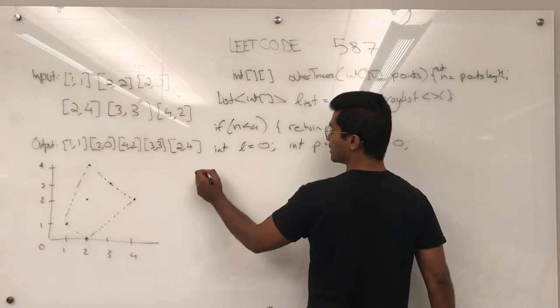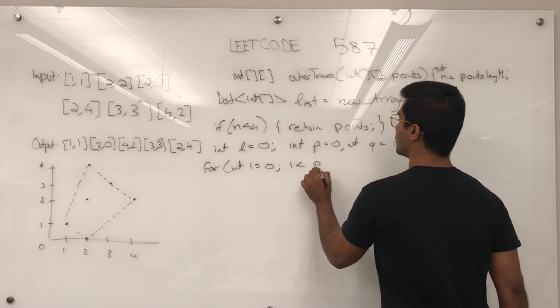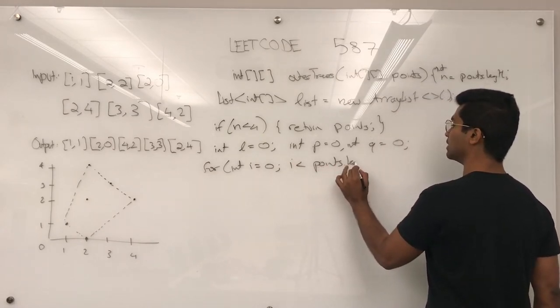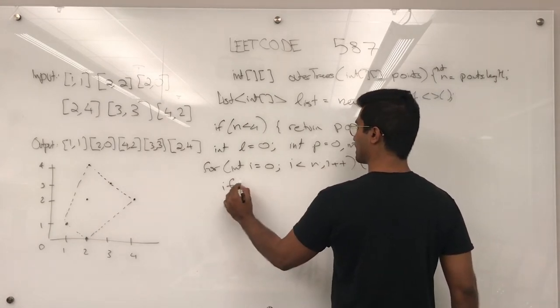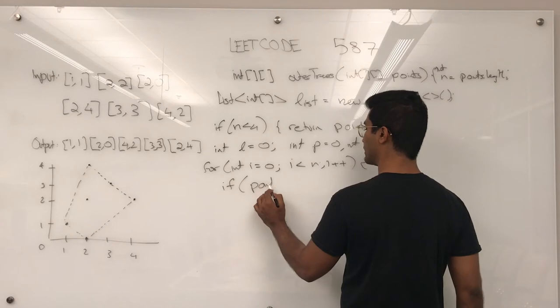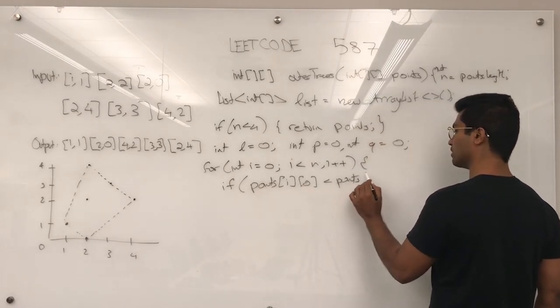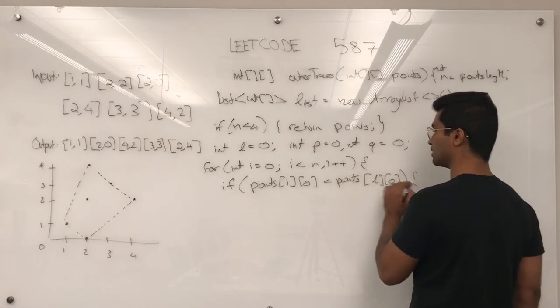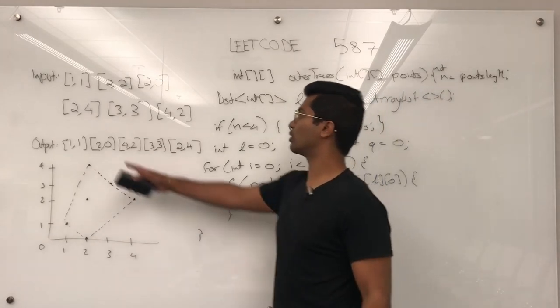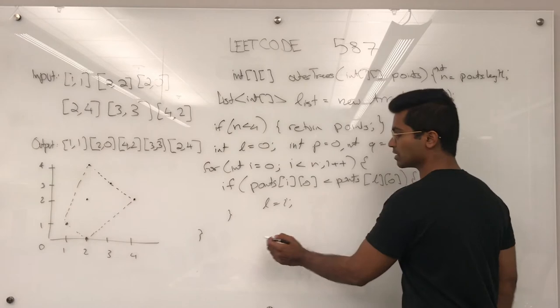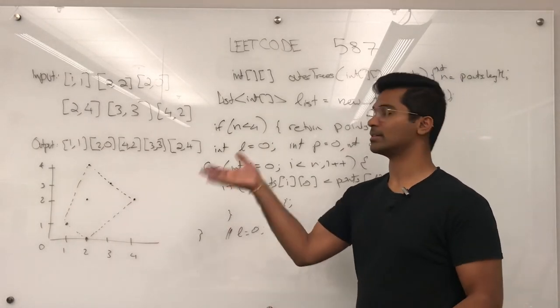So, first we have to find the leftmost, right? So, for int i is equal to 0, i is less than n, and i plus plus. If points of i of 0 is less than points of l of 0, then l is going to be set to i. In our case, 1 comma 1 is actually the leftmost, so l is going to actually start with being 0. In a different input, l might be something else.